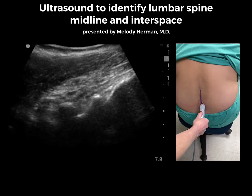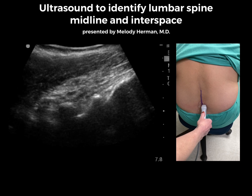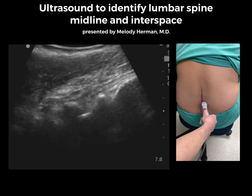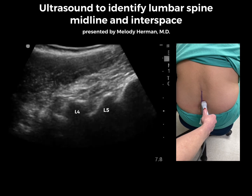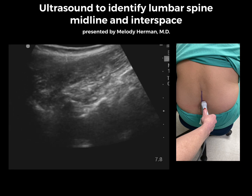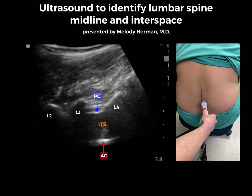To identify the interspace, place the probe in the sagittal orientation just lateral to midline with a slight medial tilt to see into the spinal canal. Here we see the bright white stripe of the sacrum caudad, followed by the triangular-shaped lamina cephalad. As we move the probe cephalad, we can identify each lamina and the exact interspace where we would like to place our neuraxial anesthetic.